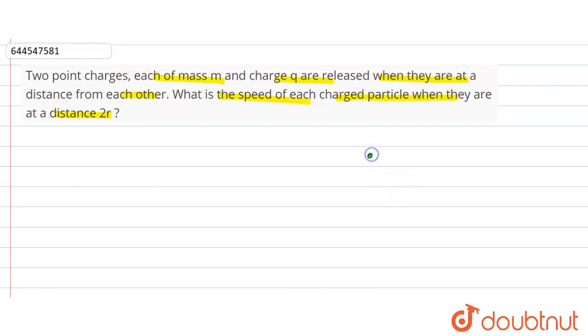So here, let's assume this is the point charge q and mass m, and another point charge q of mass m. And the distance between them is 2r. The point charges of mass m and charge q are released when they are at the distance.